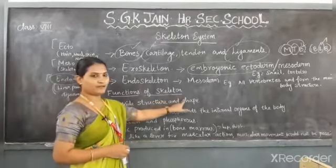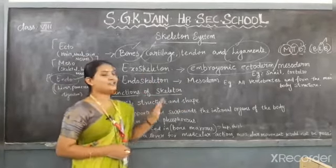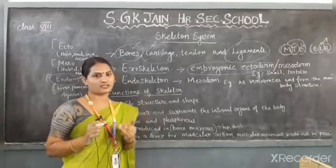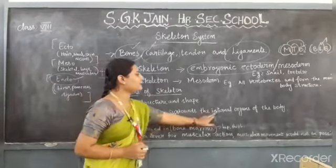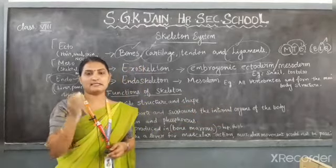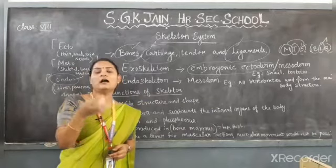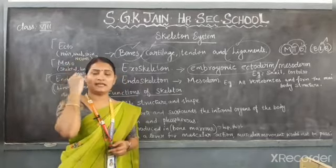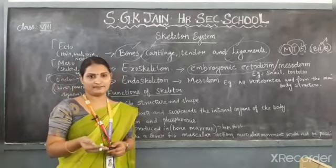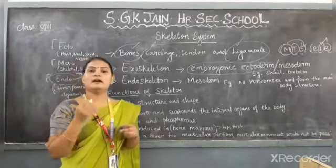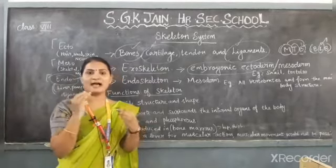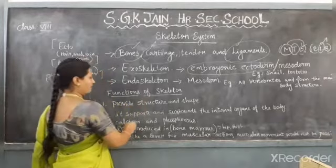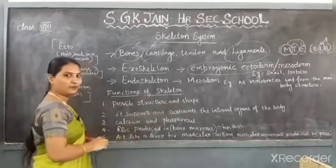The functions of the skeleton: the skeletal system provides structure and shape to the body. We have our shape because of the bone structure. It also supports and surrounds the internal organs. Major organs are located inside bones — the brain is located inside the skull, which provides protection to the brain. The lungs and heart are located inside the ribcage, and the ribcage acts as protection for them.